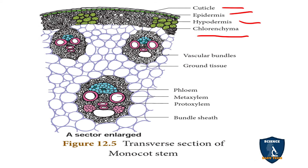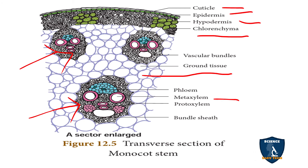Vascular bundles are scattered in the ground tissue. The function of the ground tissue is storage, while the vascular bundles conduct food and water. The shape of the vascular bundle resembles a skull — two metaxylem vessels look like eyes, protoxylem looks like a nose, and the protoxylem lacuna looks like a long mouth. The xylem is V-shaped or Y-shaped, and the phloem is positioned like a forehead.